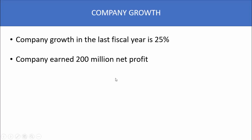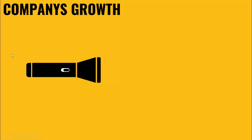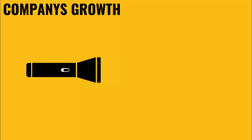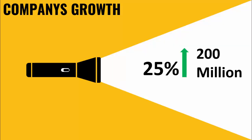For this purpose, I've recreated the slide with a gold background and added the company's growth title. I added a torch or battery icon, and when you click it, a light comes out showing 25 percent growth represented by an upward arrow, plus 200 million net profit. You can see the difference — this format is always better to show something unique to stakeholders or a bigger audience.